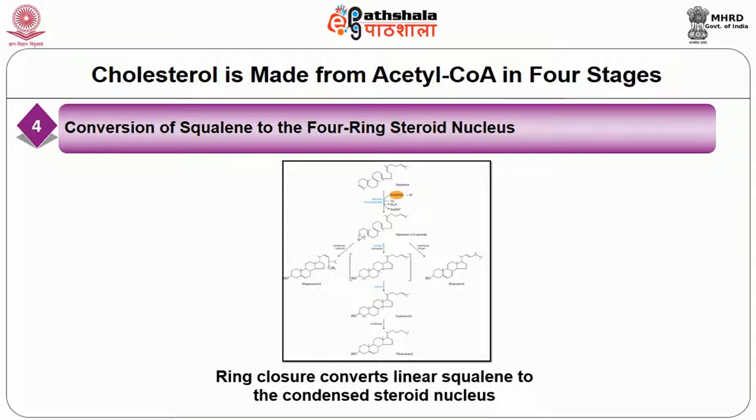Cholesterol is the sterol characteristic of animal cells. Plants, fungi, and protists make other closely related sterols instead, using the same synthetic pathway as far as squalene-2,3-epoxide, at which point the pathway diverges slightly, yielding other sterols such as stigmasterol in many plants and ergosterol in fungi.